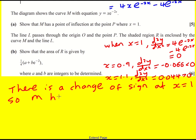So M has a, I'm going to abbreviate it here, point of inflection at P, where x equals one.